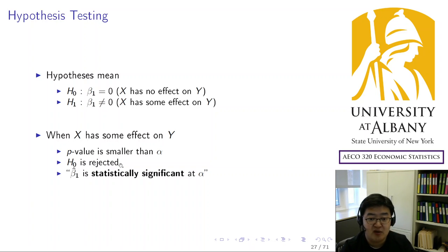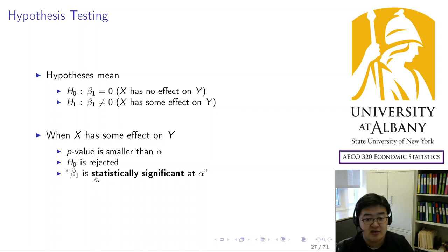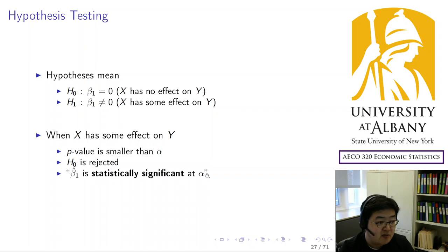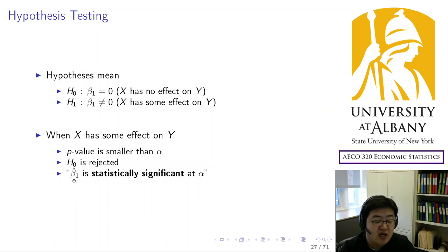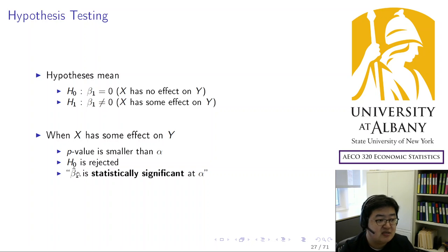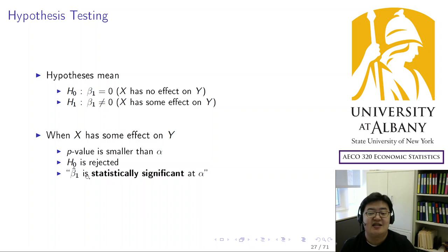When you reject the null hypothesis, we specifically call this statistical significance. We say the coefficient β₁ — or its estimator — is statistically significant at alpha. By definition, we conducted a hypothesis test that this parameter equals zero, but we rejected it, so the parameter is different from zero. That is what statistical significance means.